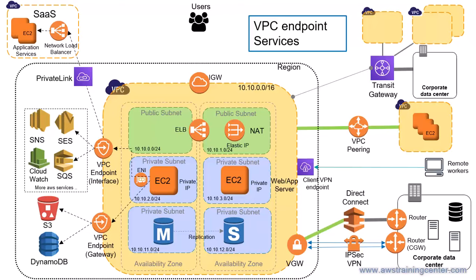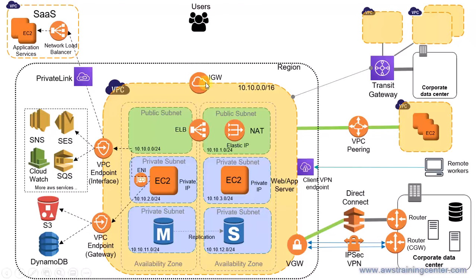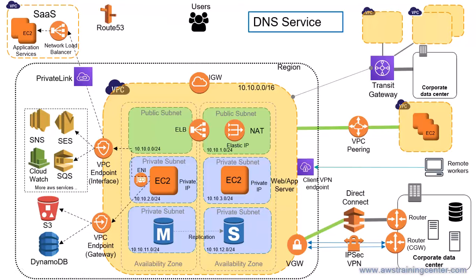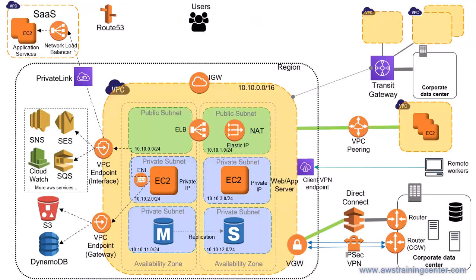To access your application, you can use the load balancer DNS name provided by AWS, or you can have a domain like fb.com point to the load balancer. AWS has Route 53 for this — a DNS service where you manage your hosted zone and create different record sets. For example, if you want to access example.com, Route 53 returns the corresponding IP address of the load balancer, and you can access it over the internet without needing to remember any IP address.